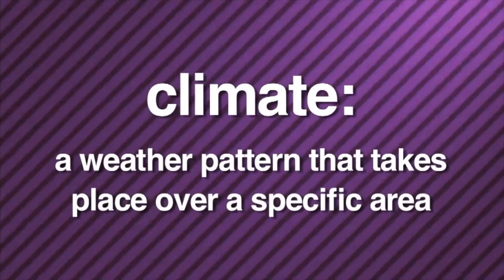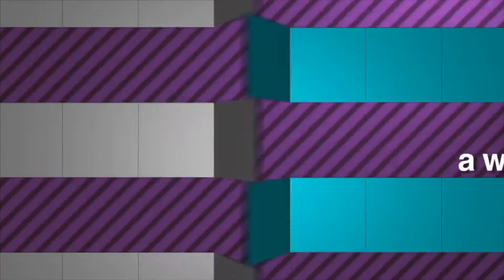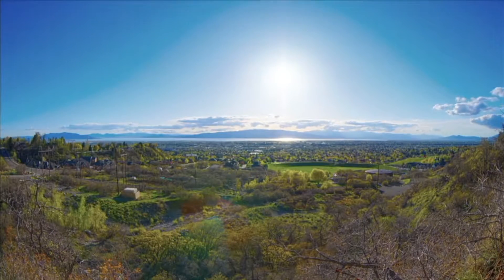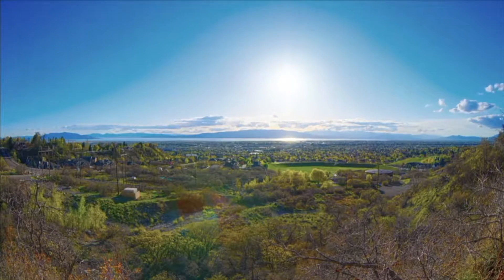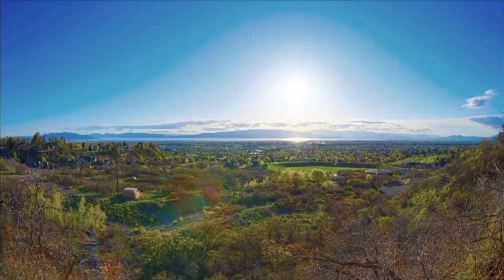A weather pattern that takes place over a specific area is called climate. There are many different types of climates found on Earth — we all live in a climate. Scientists have broken down the world's climates into three main types.